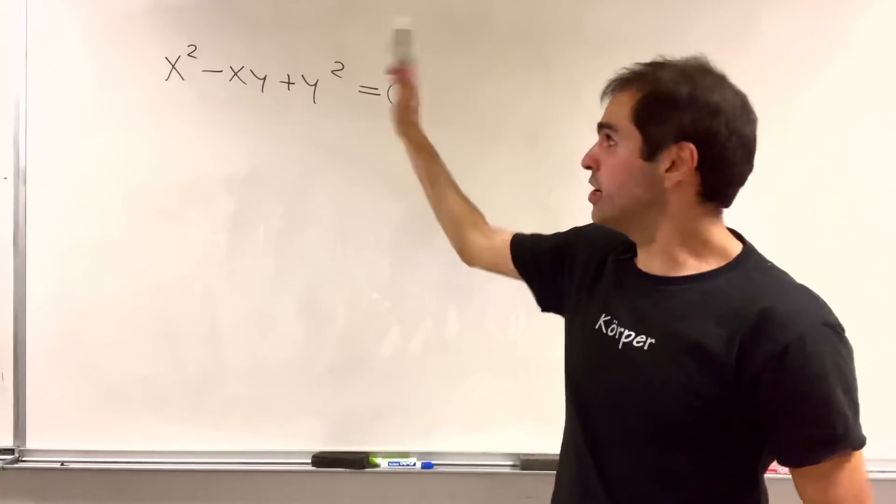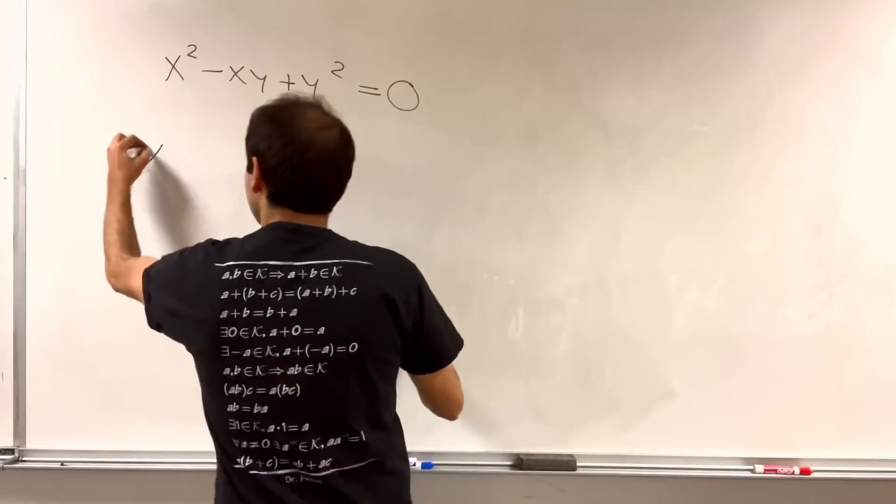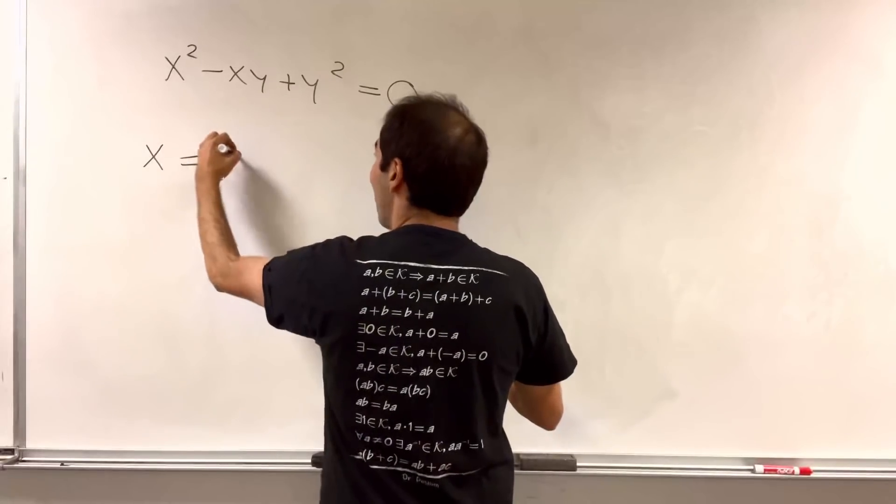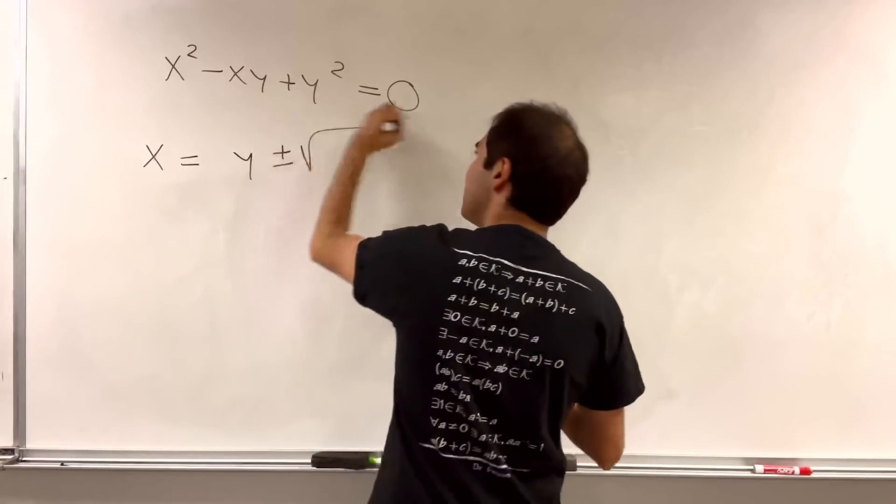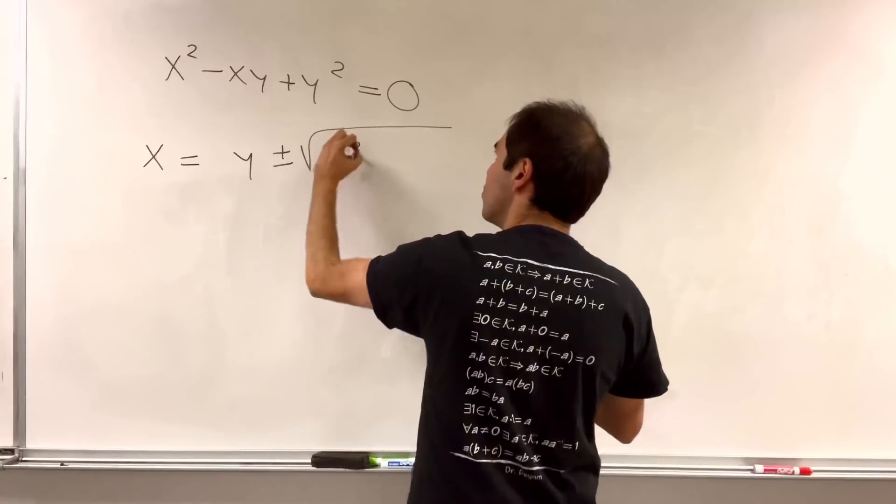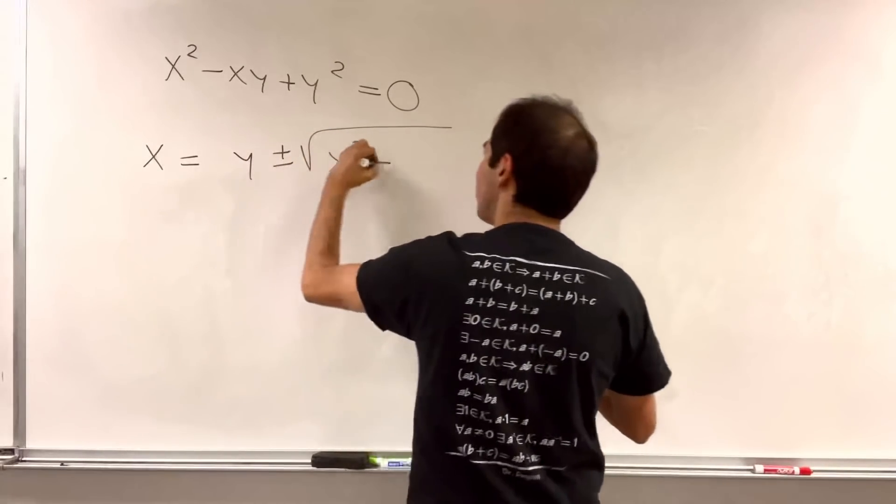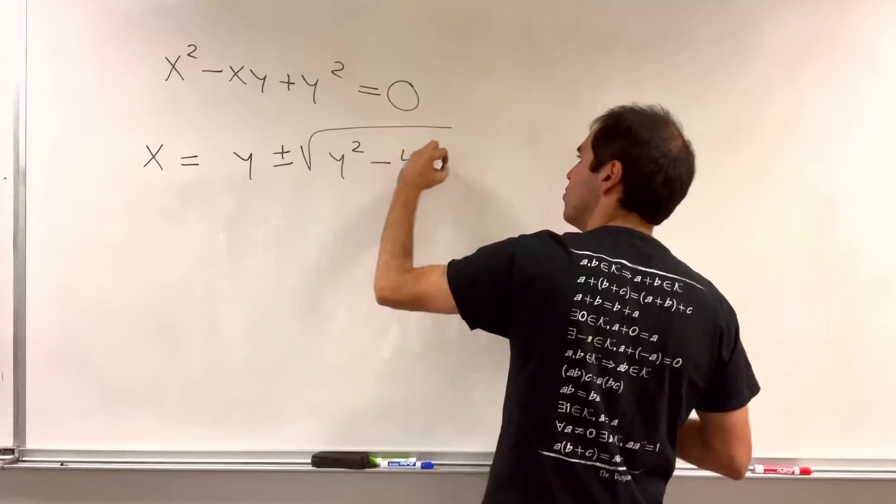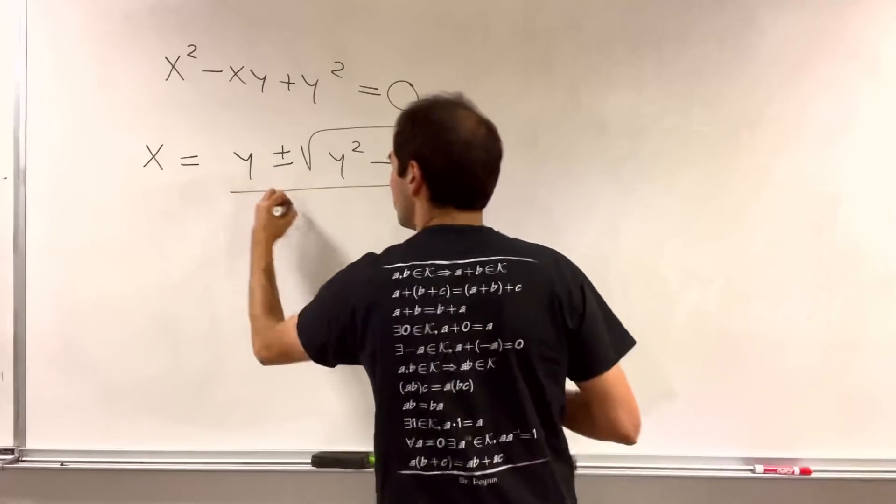So here, x is minus b, so y, plus or minus square root of minus y squared, so y squared, minus 4ac, so 4 times y squared, over 2.